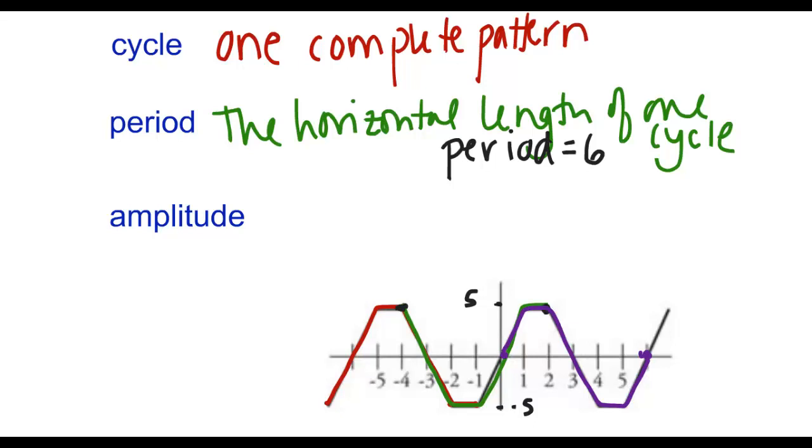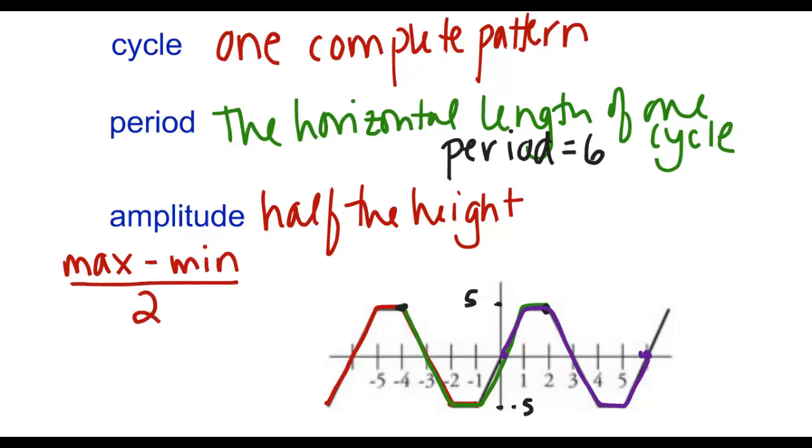Our next vocab word is amplitude. And that is half the height of the function. An algebraic way of obtaining half the height is you could think of the maximum value minus the minimum value. That would give you the height. And then to get half of it, you divide by 2.